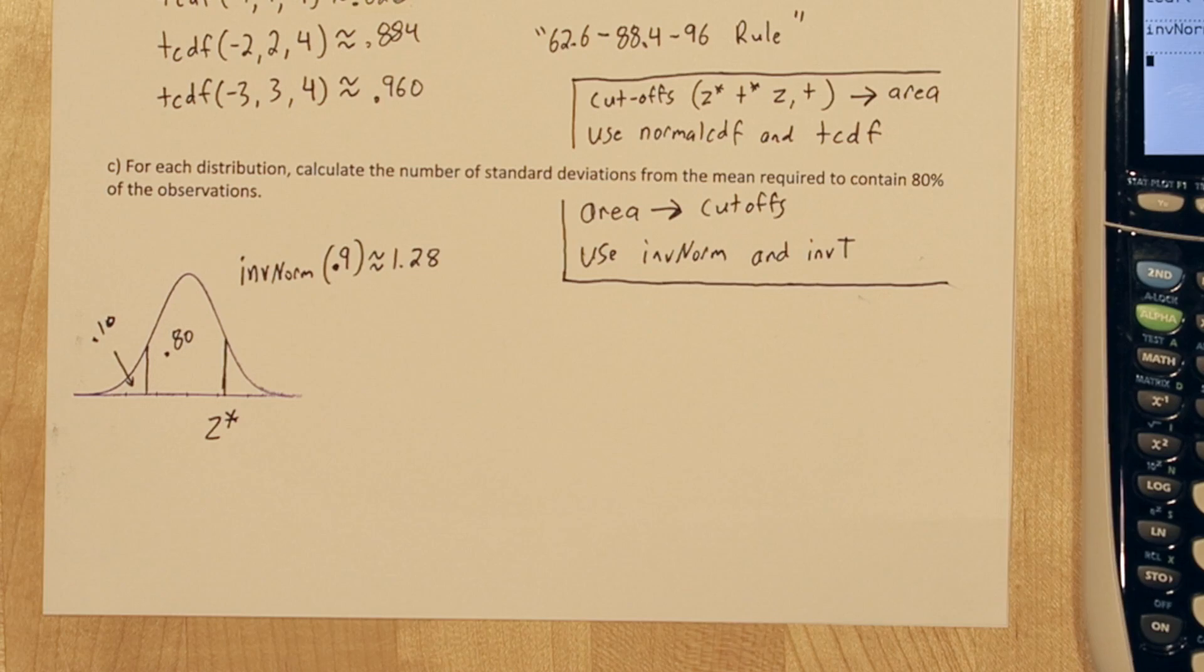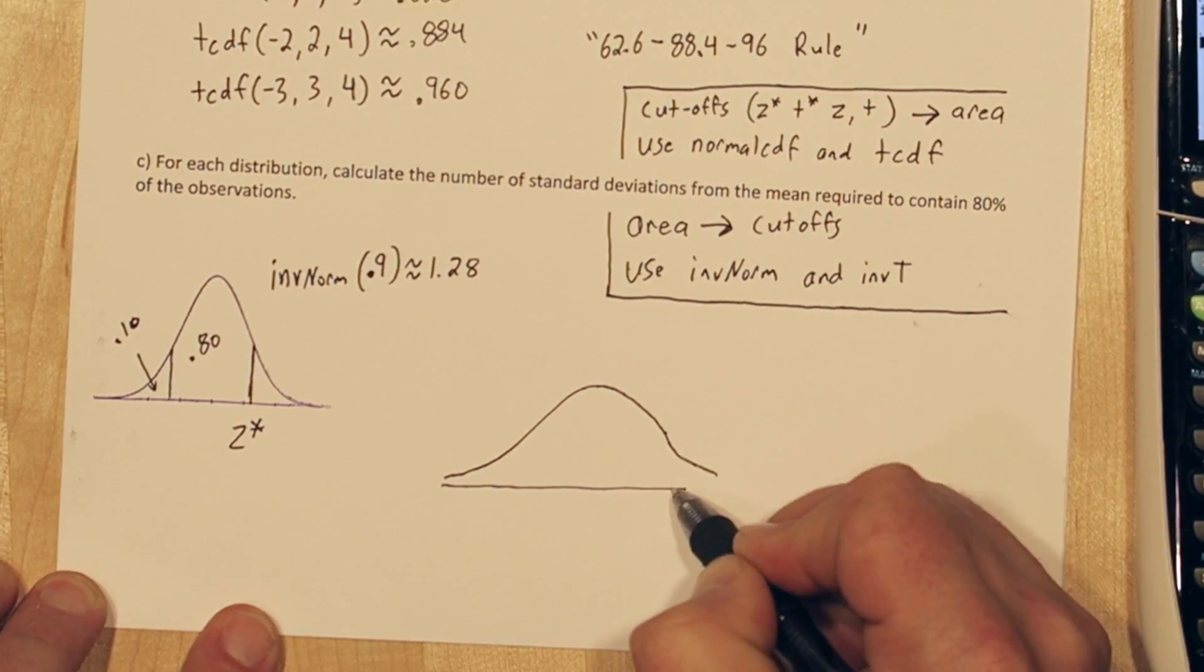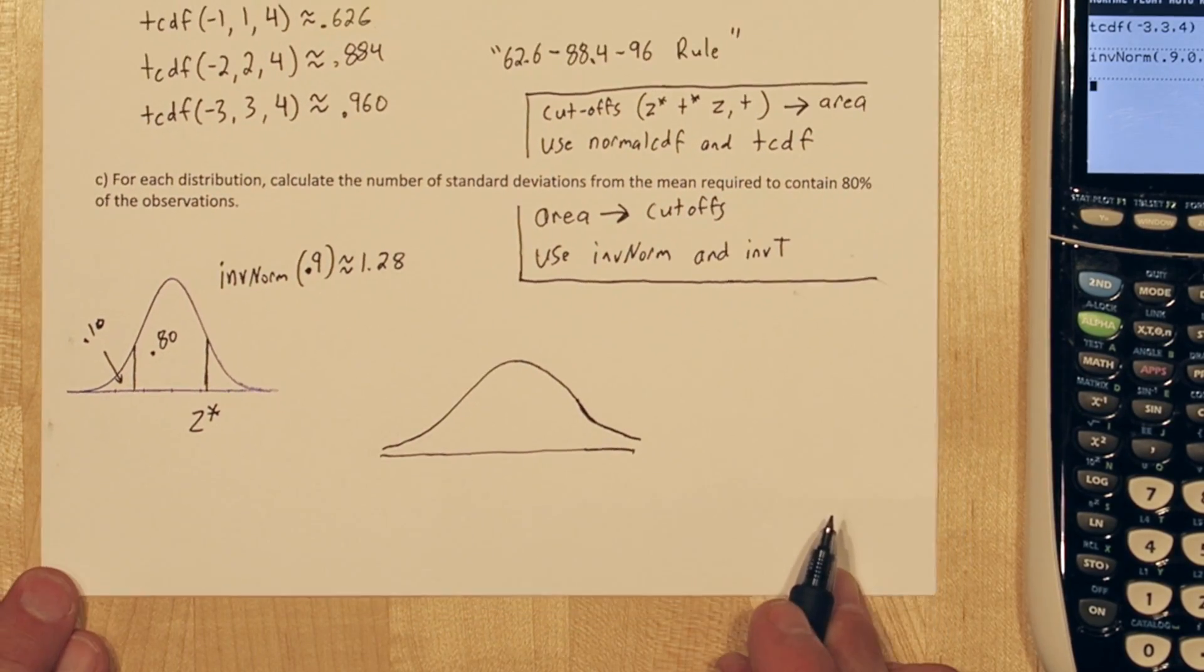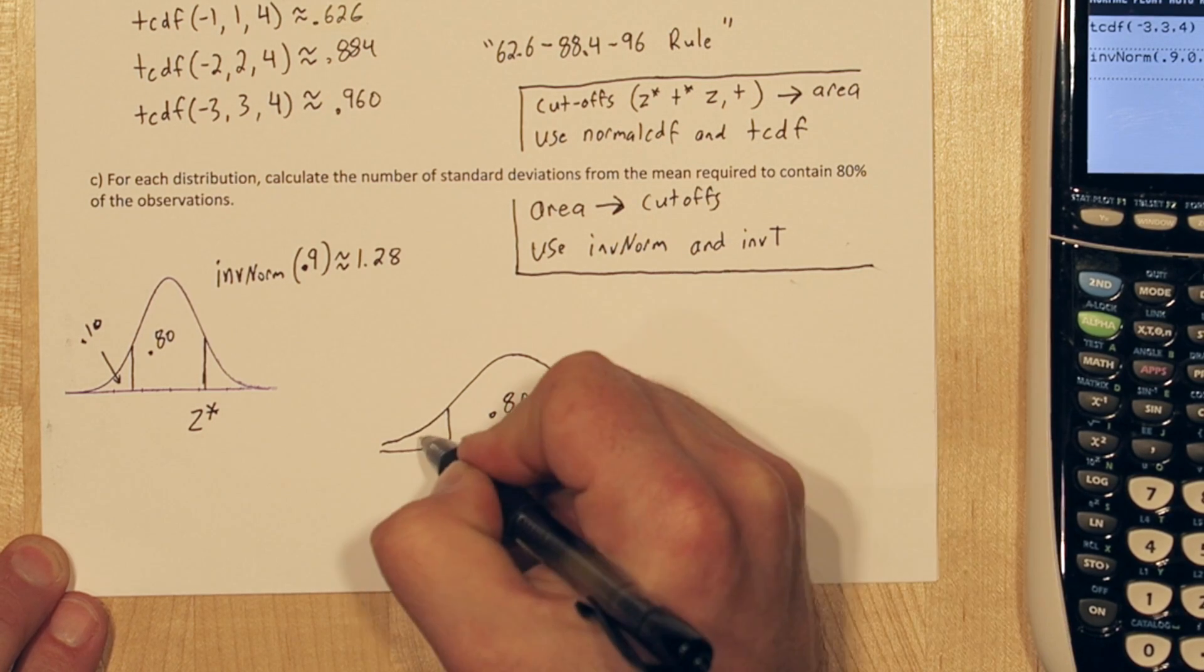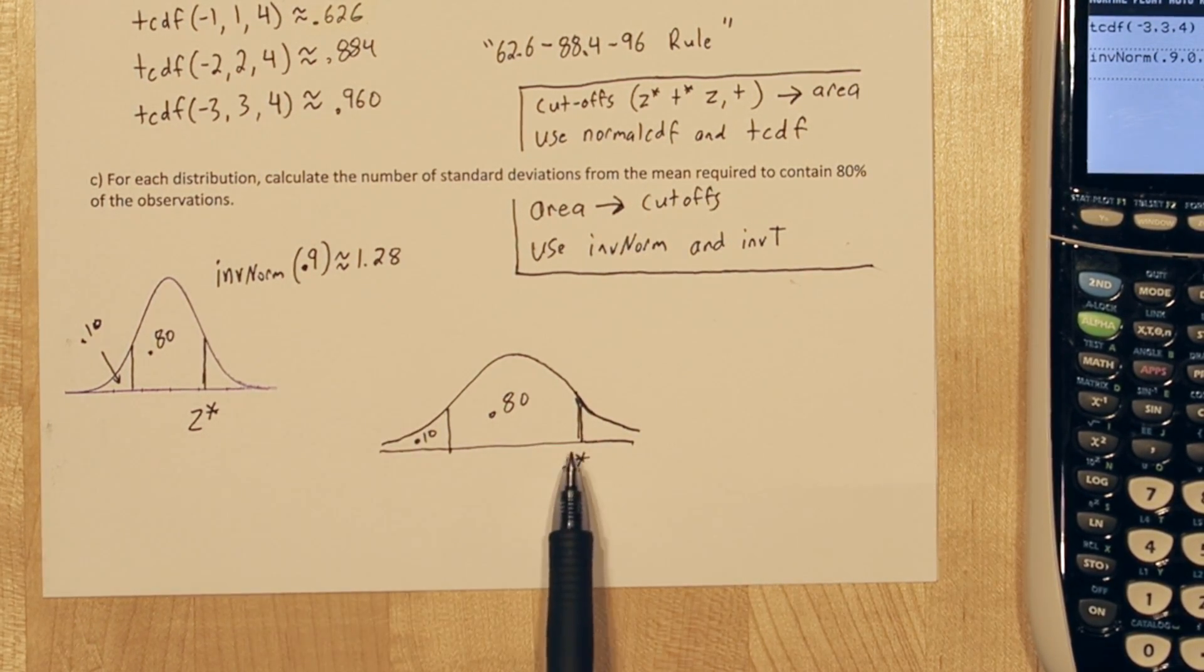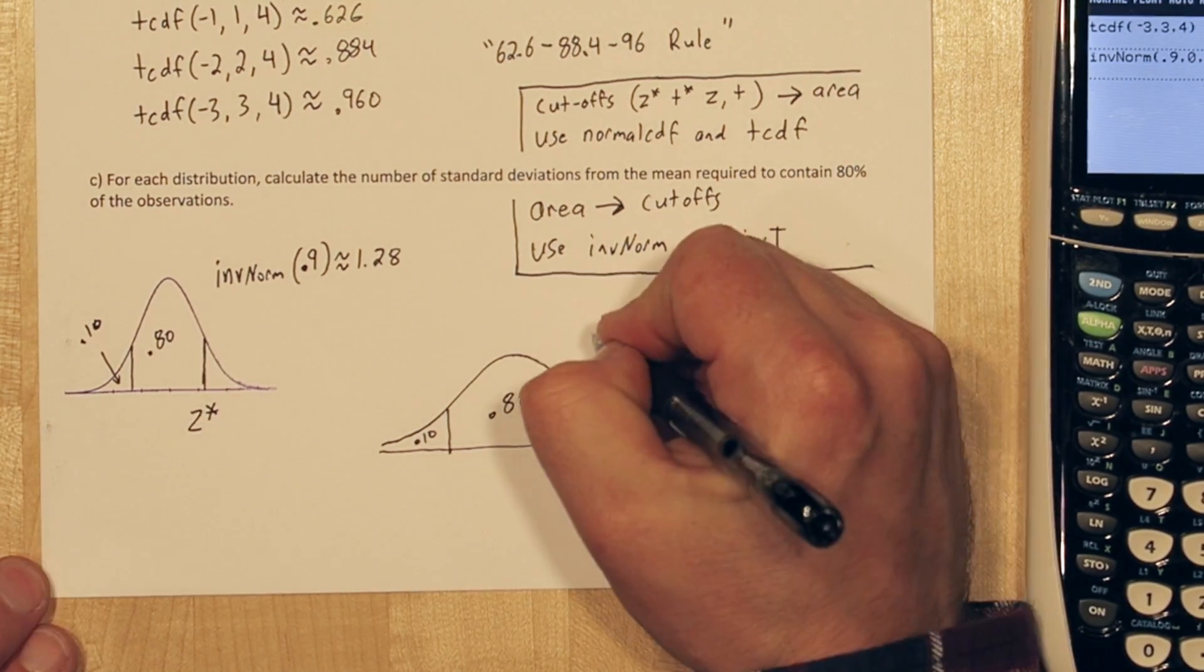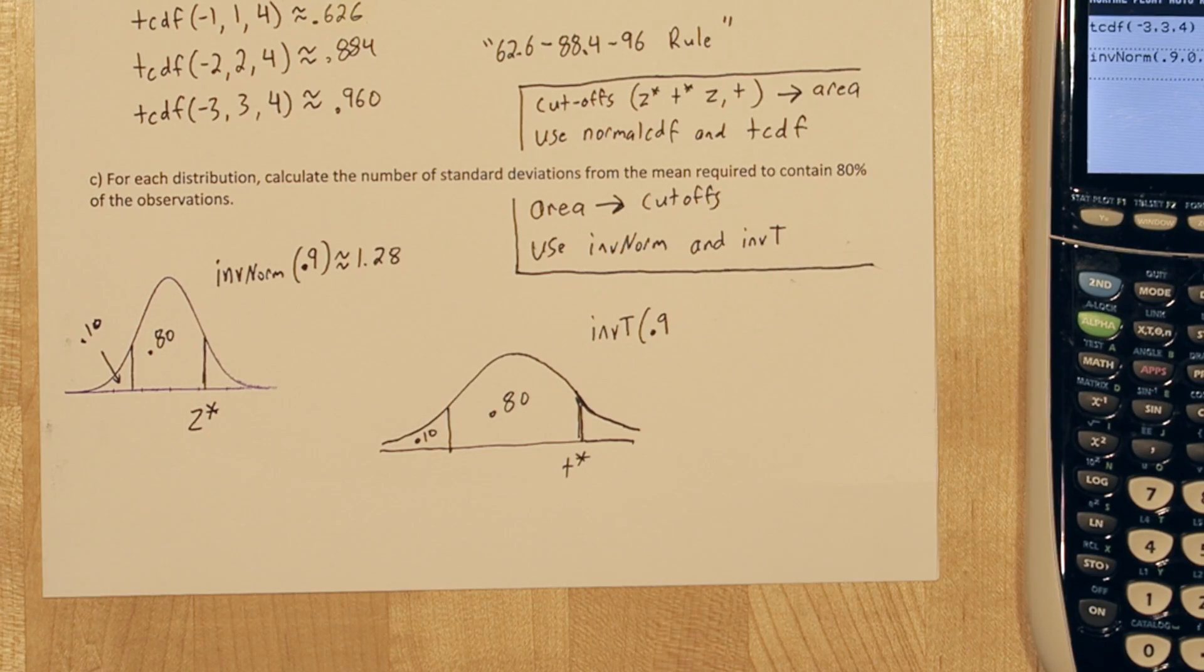The inverse t function works the same way, except I don't have a stamp for it since every t distribution is a little bit different. So we'll just have to sketch it. So again, we're going to use inverse t, and we have to use the number 0.9, because we're talking about the 90% to the left of this cutoff value, t star. We also have to tell it how many degrees of freedom we're dealing with.